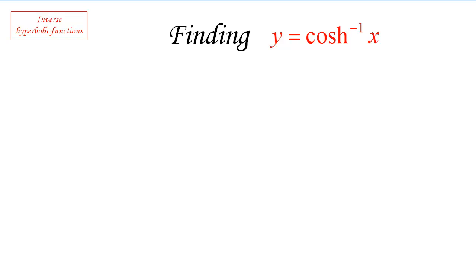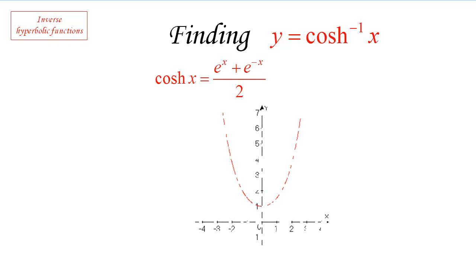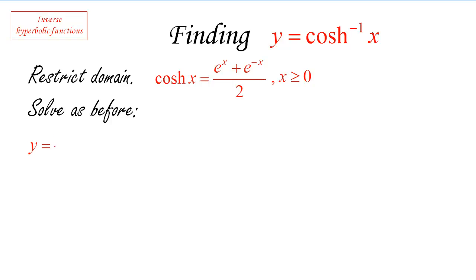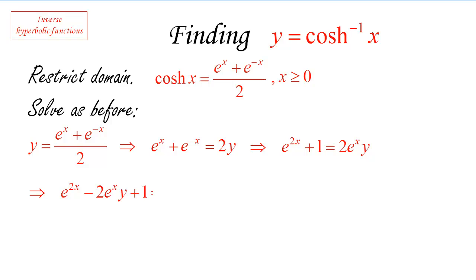Let's see how the same thing can be done with inverse cosh. It's exactly the same process, except we have to restrict the domain — and that's going to prove very important. The formula for cosh X is (e^X + e^(−X)) / 2, and that is our graph. We need to restrict the domain by taking only positive values of X, so X ≥ 0. Keep that in mind, because it will be crucial in a moment. We solve as before: set Y equals that expression, eliminate denominators, then multiply everything by e^X, and rearrange into a quadratic equation.